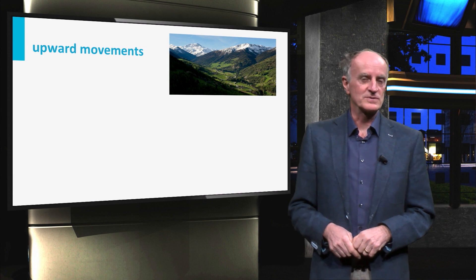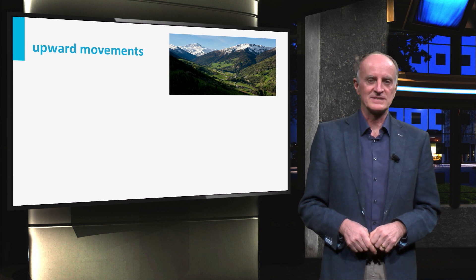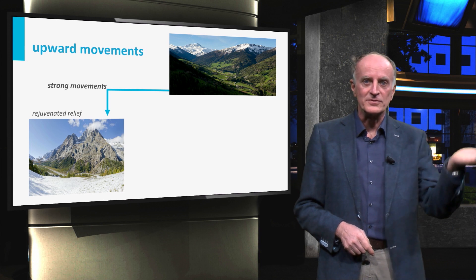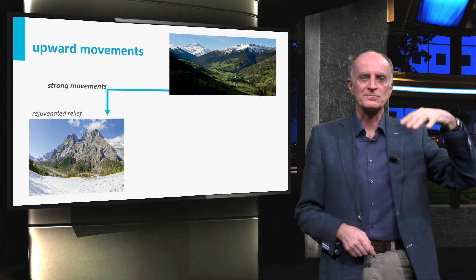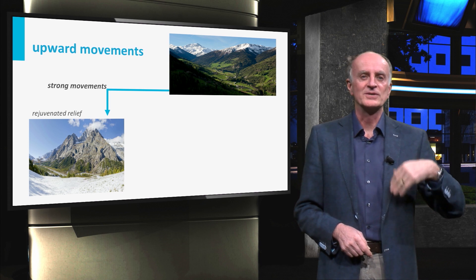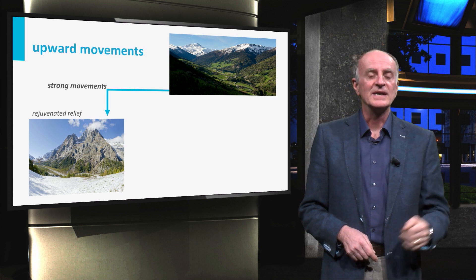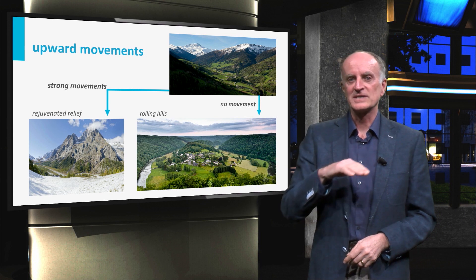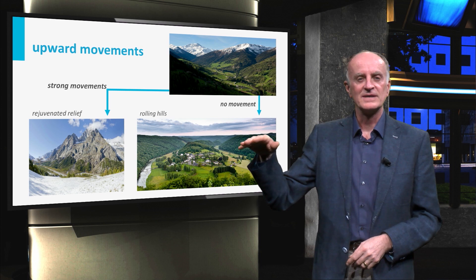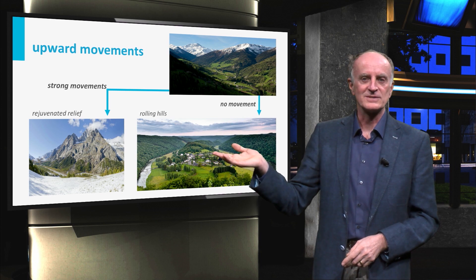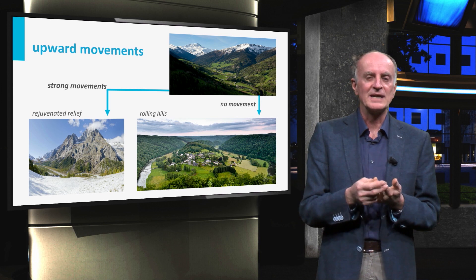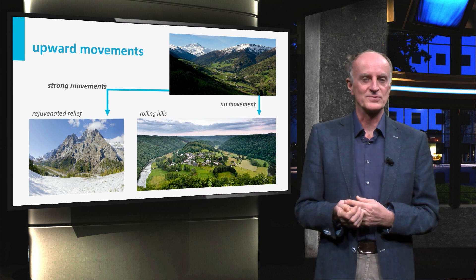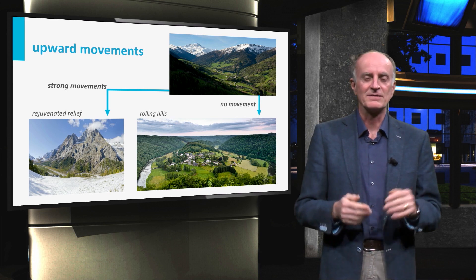Vertical movements in the source area are of great importance in the sedimentary system. If the source area experiences strong vertical movements, relief is rejuvenated and sediment production can continue for a long time. If on the contrary, vertical movements decrease or even end, then the source area will become less productive, eventually producing no sediments at all. Vertical movements, rock types and climates in the source area are the key factors controlling the amount and type of sediments produced.